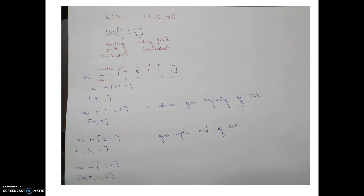The next important concept is list slicing. Like taking a slice of cake — from the whole cake you just want a part — list slicing lets you extract a part of a list. The syntax is: list_name[i:j], where i is the starting index (inclusive) and j is the ending index (exclusive), meaning the element at index j is not included in the result.